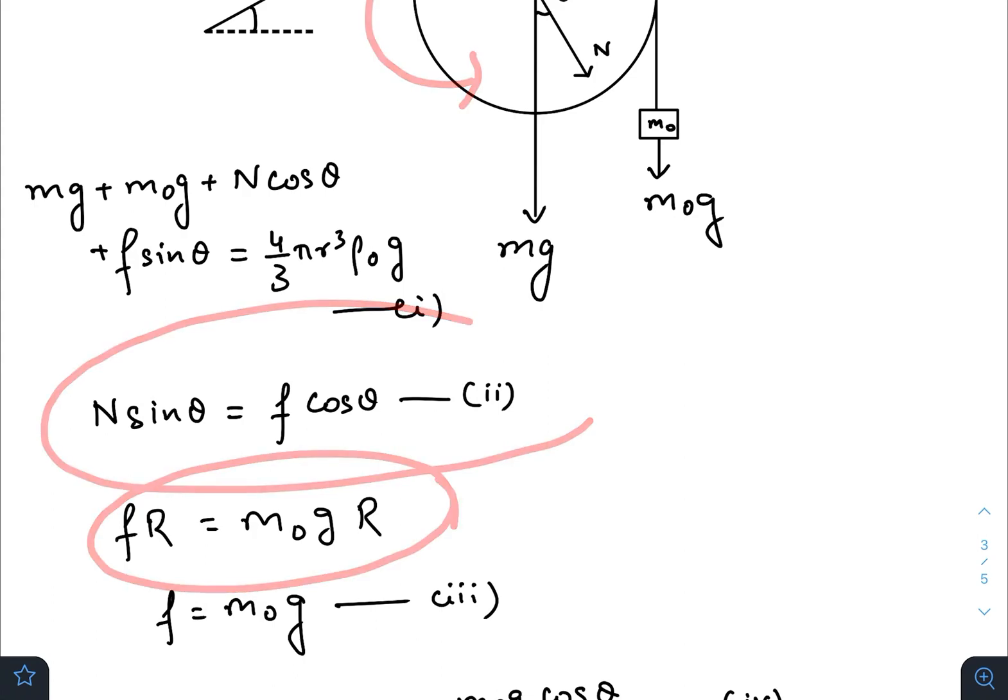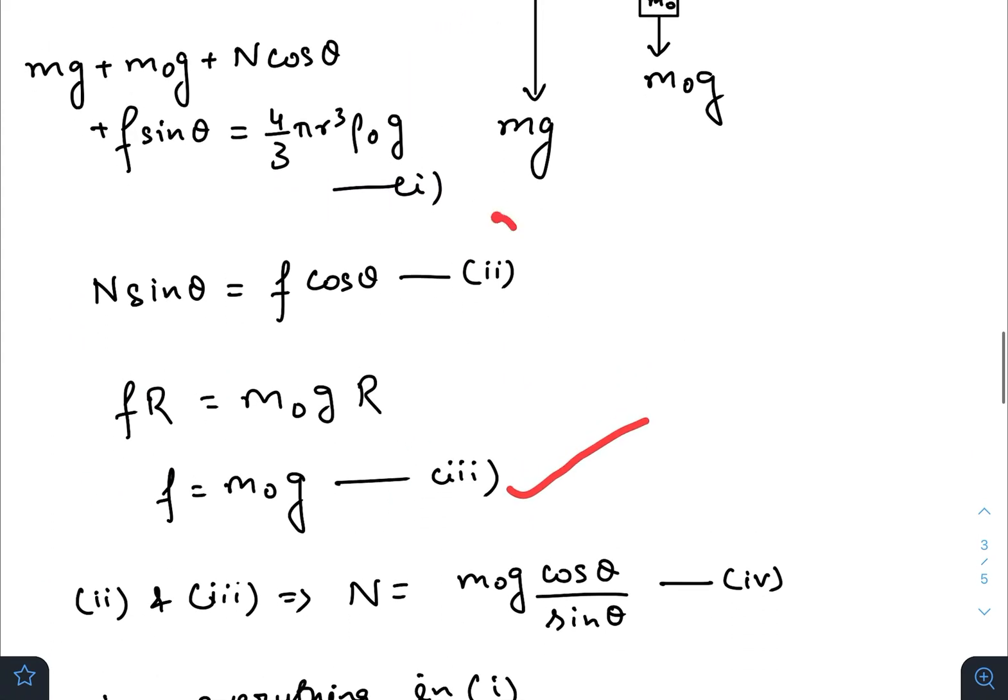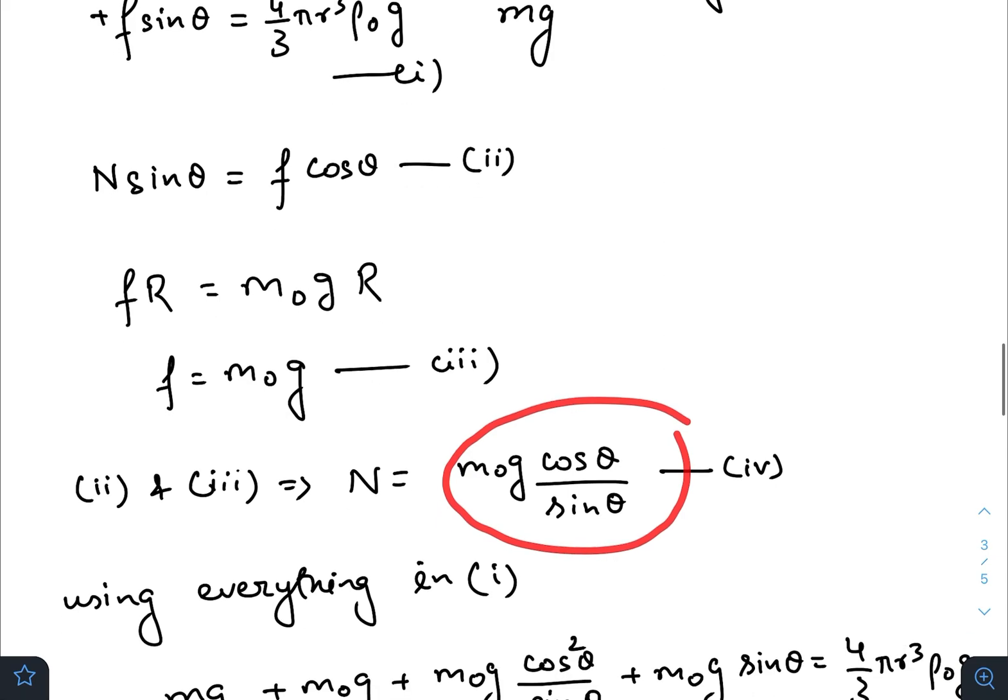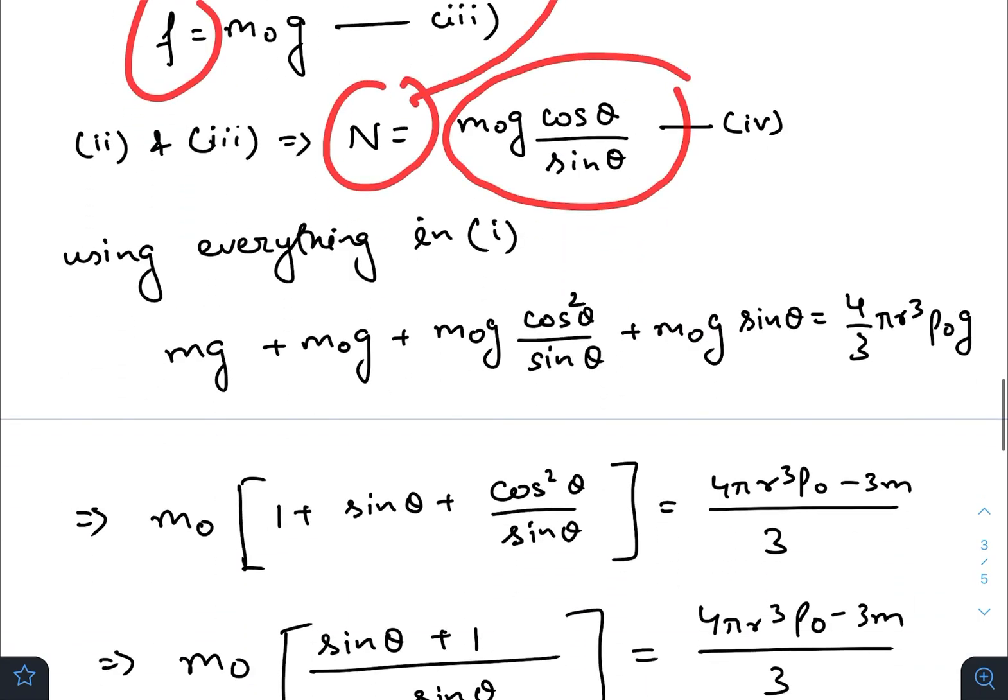Clockwise torque due to m0 g will be equal to anti-clockwise torque due to this friction, right. From there we get this one. And from equation 2 and equation 3, we get normal equals to m0 g cos theta by sin theta. We got n, we have f, just plug these two values in equation 1.